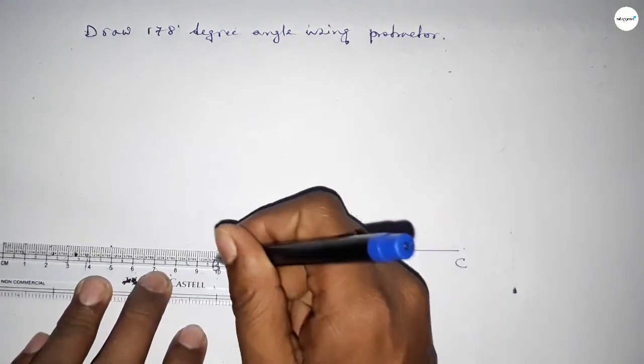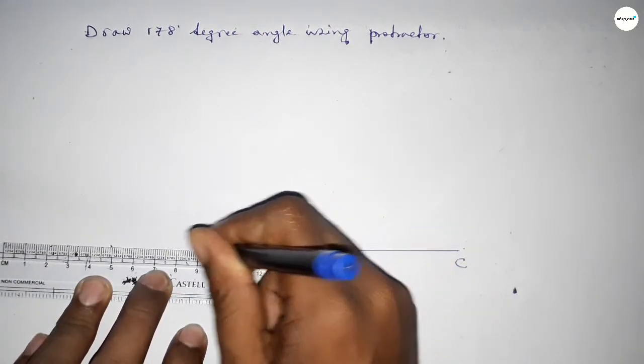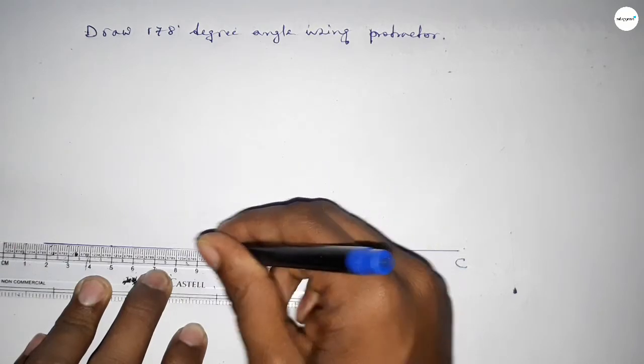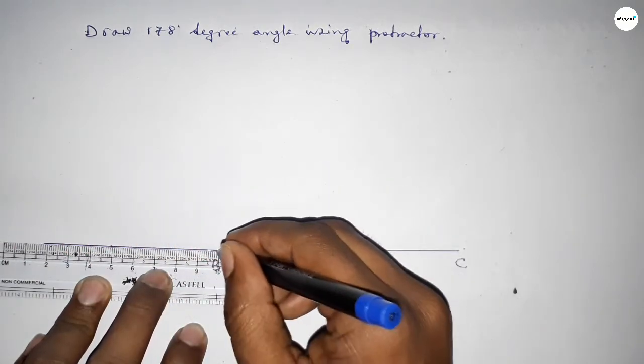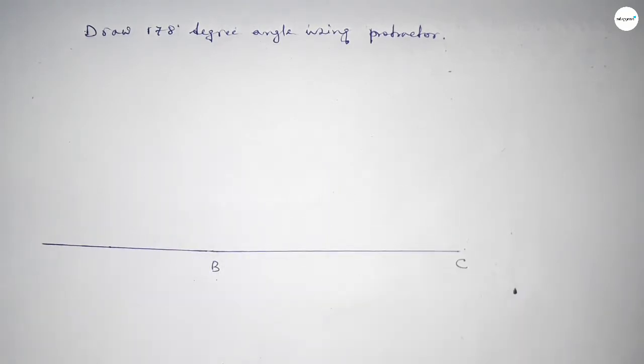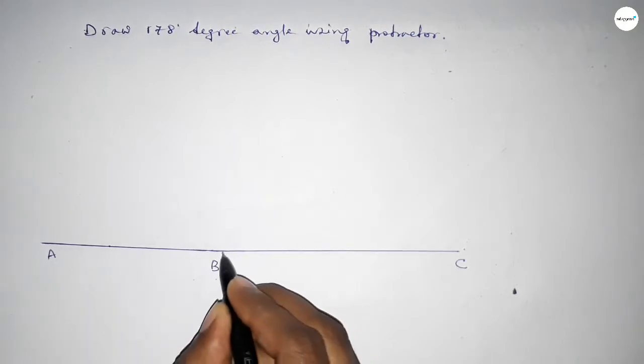Next we have to join this to get 178 degree angle. So joining this side and taking here point A. So angle ABC, this is 178 degree angle.